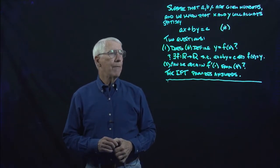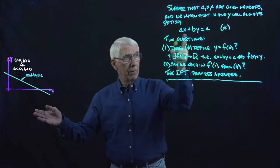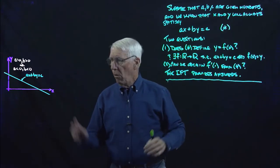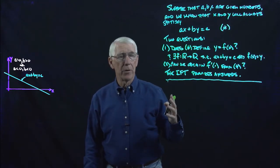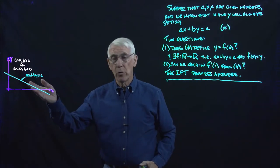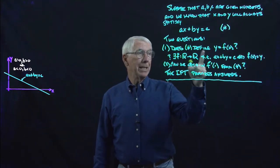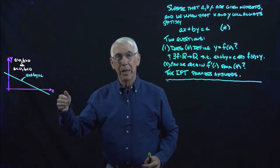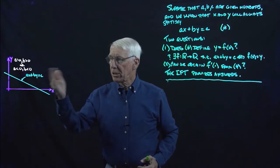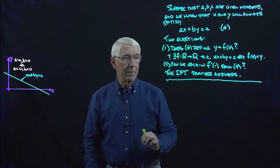Let's look at the graph of this equation. Here we have the graph in the case in which the A and B coefficients are both positive or both negative — in other words, when A and B have the same sign. The graph is going to be a downward-sloping line, a linear equation, downward-sloping line in R2 in the X and Y variables. It's clear from the picture that we have Y being determined as a function of X. It's easy to write down that function explicitly, and we can get the slope of the line — the derivative of that function — from A and B.